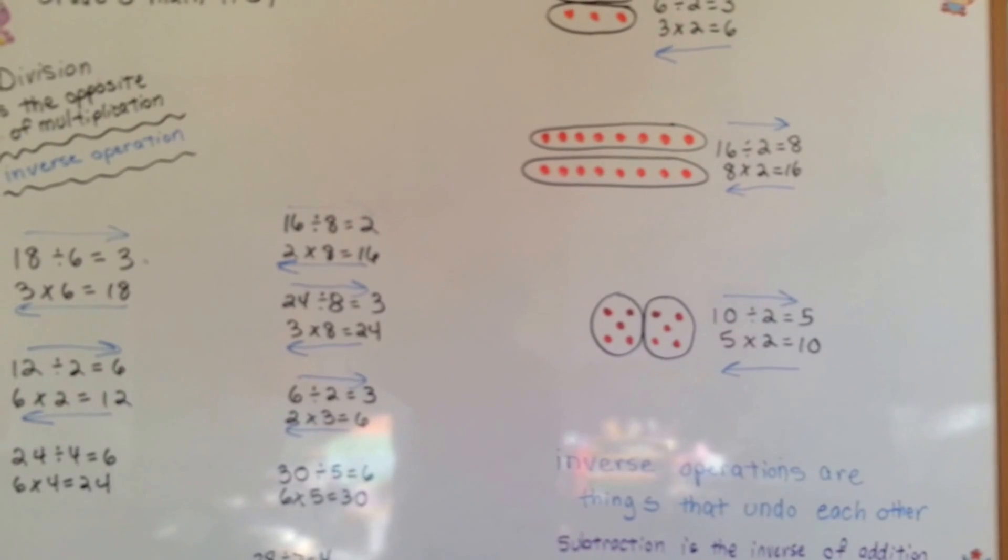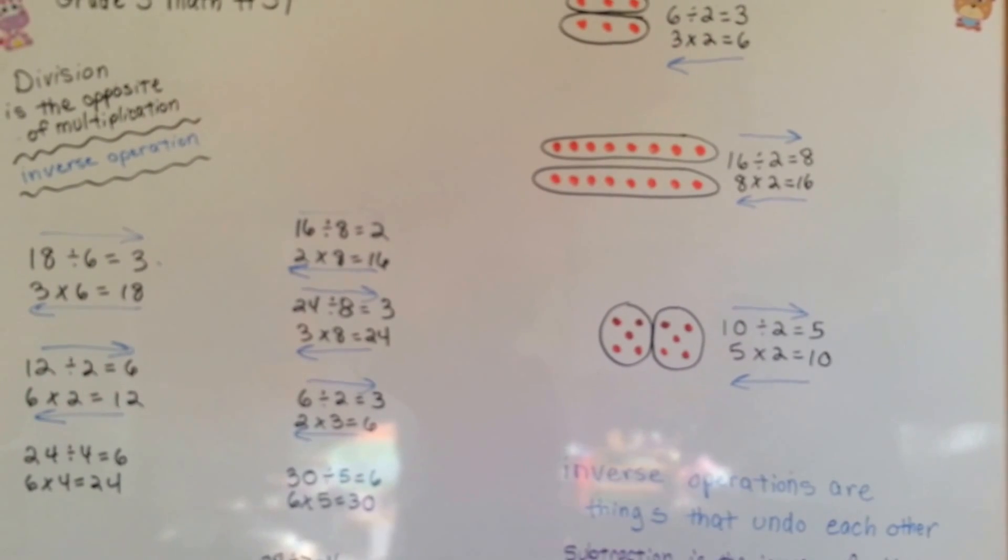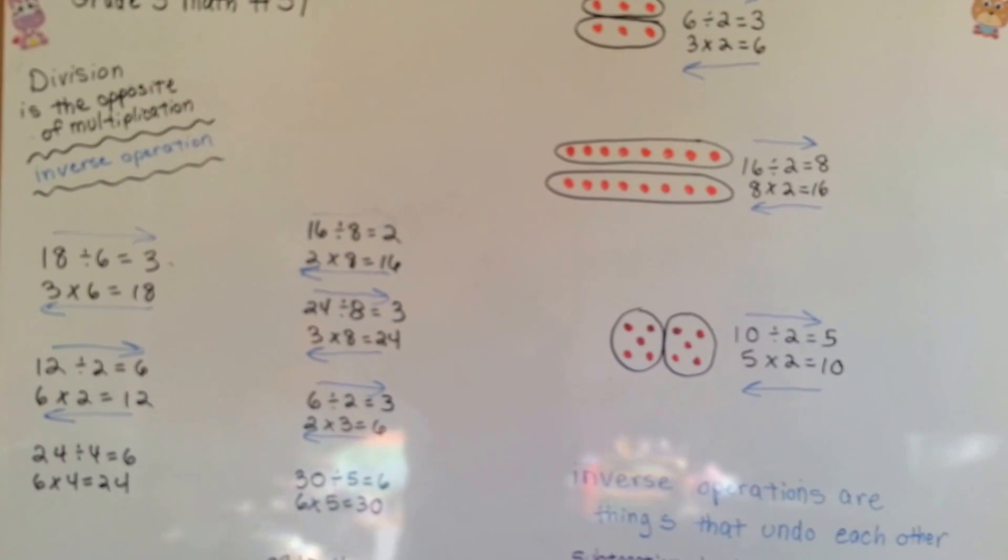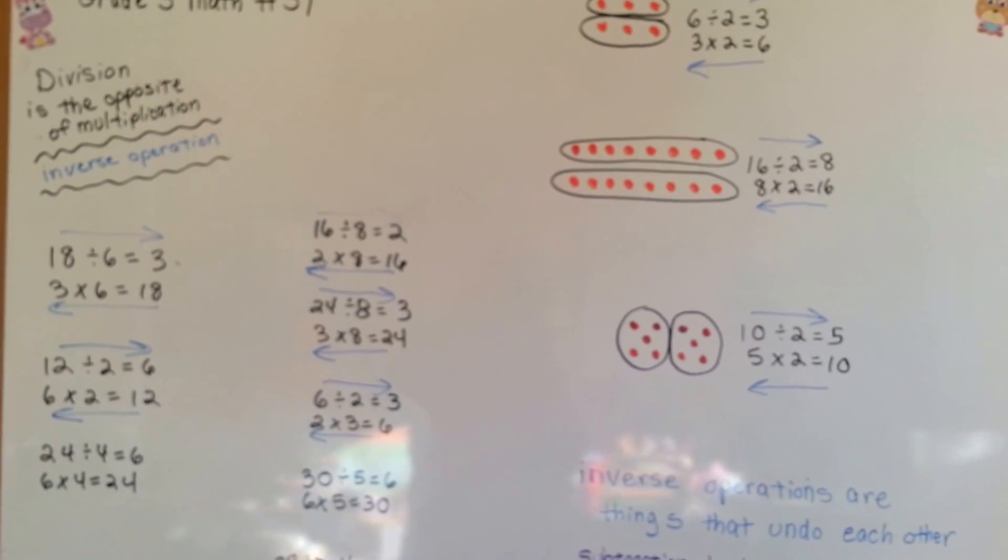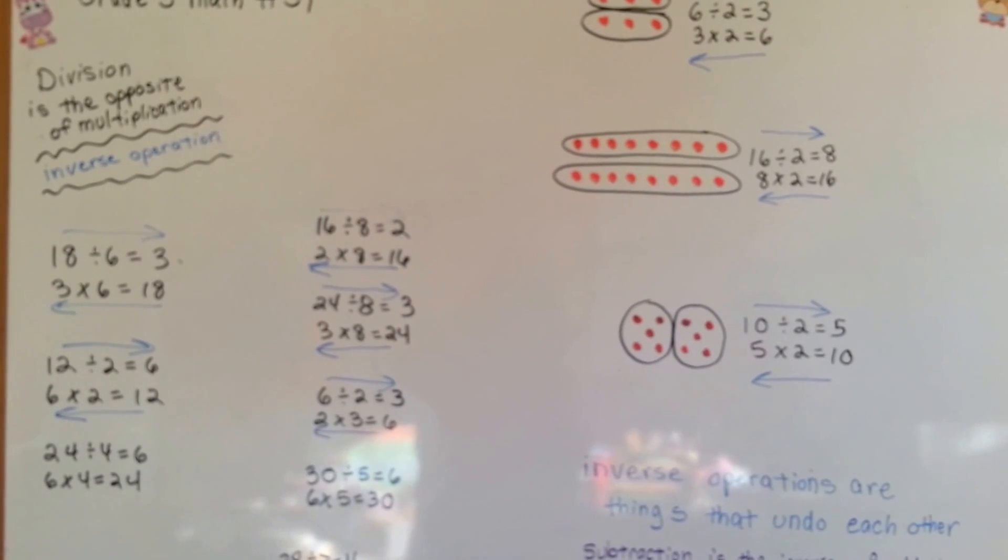When you do your multiplication or division homework and you want to check it to see if it's right, do the inverse operation. If you're dividing and you want to make sure you did the division problem right, try multiplying it and seeing if you come up with the same answer. That's a way to check your homework. See you next time.